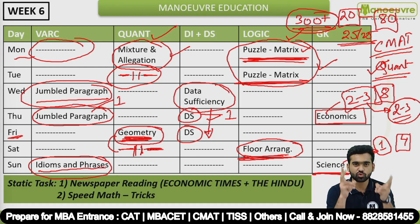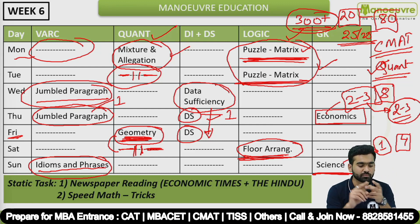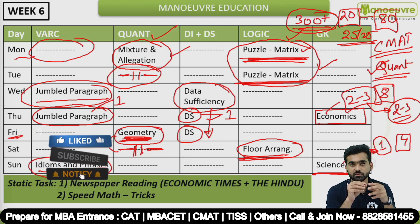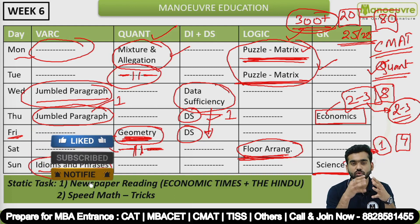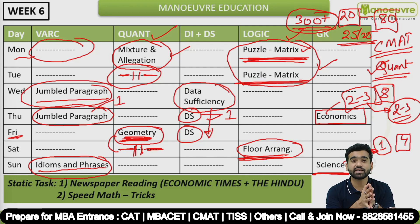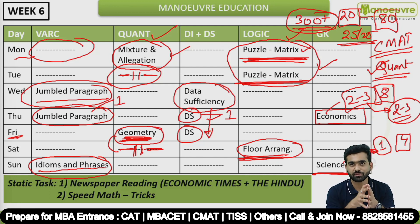For the static part, read two newspapers: Economic Times and The Hindu. The Hindu covers current affairs well, and Economic Times covers business and college-related topics. Speed reading is important — spend at least 10 minutes daily on speed reading and 20 minutes on newspaper reading. This is what you have to do in Week 6.